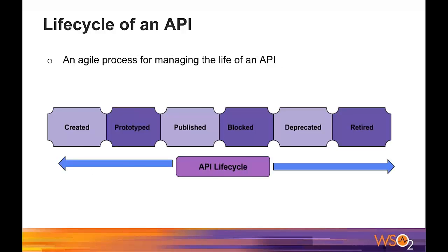So what is the lifecycle of an API? Like other assets and services, the lifecycle of an API means an agile process for managing the life of an API from its creation time to retirement. Basically an API will have different stages from design time to deployment, where the API will be discovered through a portal, managed across multiple versions, deprecated once old enough, and terminated totally once no consumers are using it.